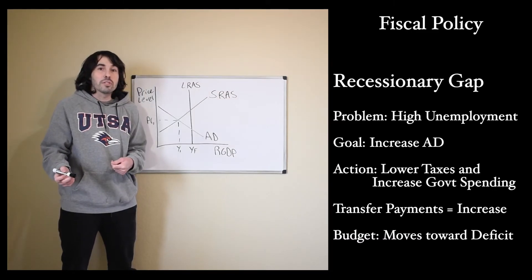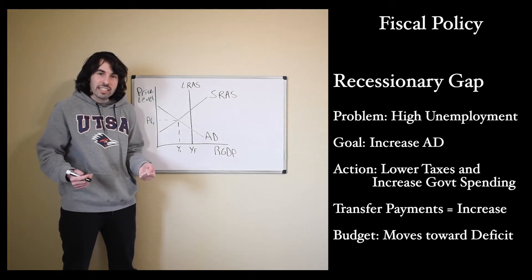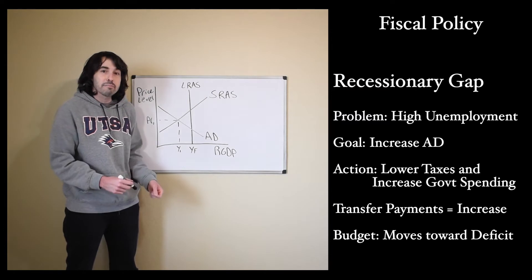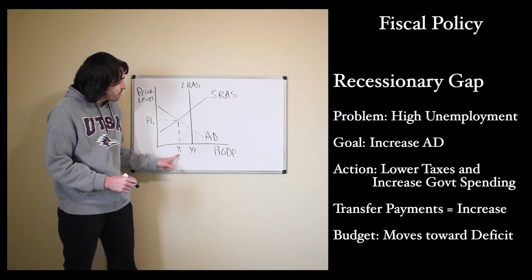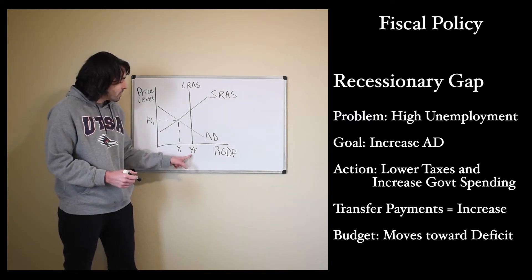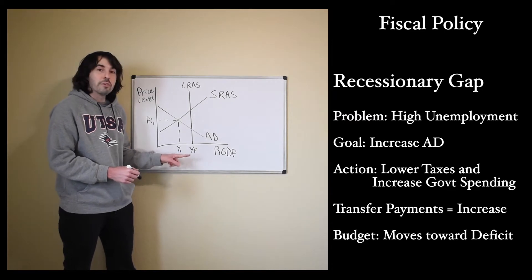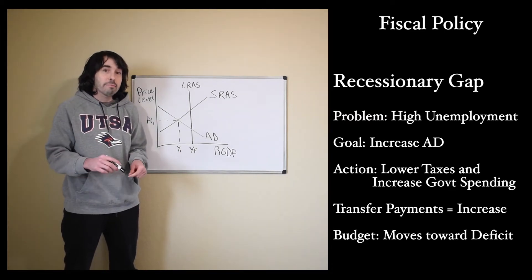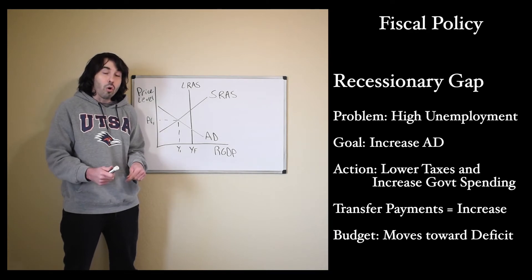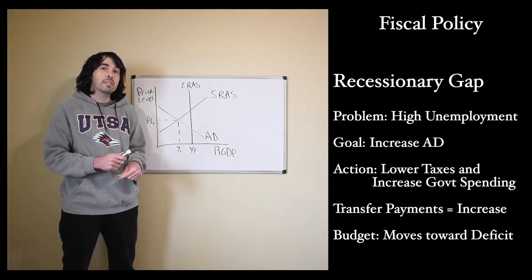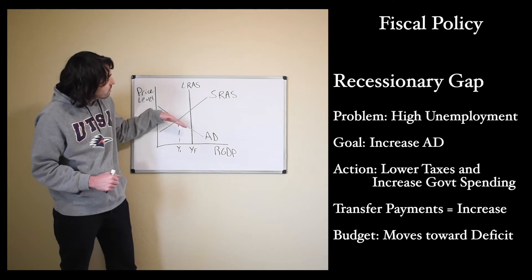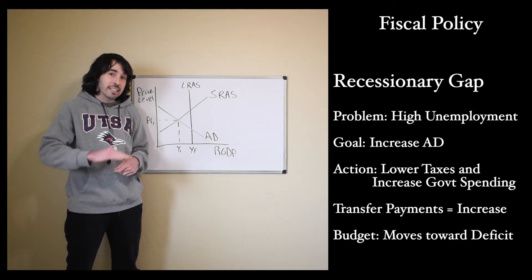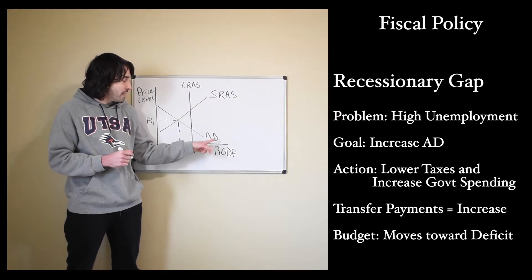First, let's look at what the government would do to fix a recessionary gap. Remember, in a recessionary gap, our big problem is we have a high unemployment rate. Our current real GDP is less than our potential real GDP, and the unemployment rate is greater than the natural rate of unemployment. So our problem, we need to get people back to work. The goal to fix that, the government wants people to spend more money. They want aggregate demand to increase and shift to the right. They'll do that two ways, either cut taxes, and then consumer spending.